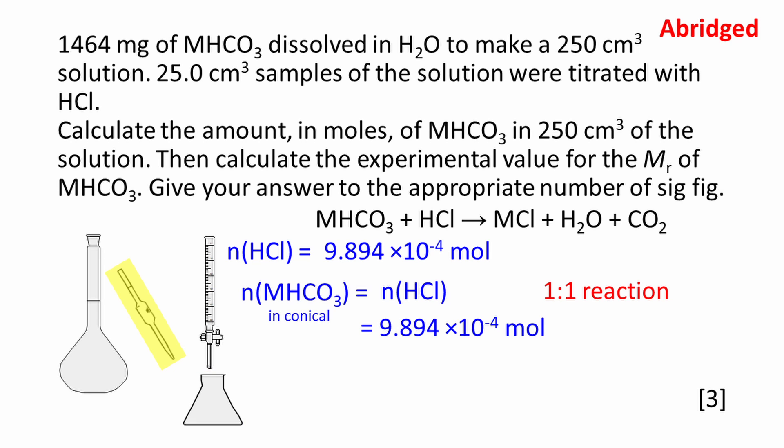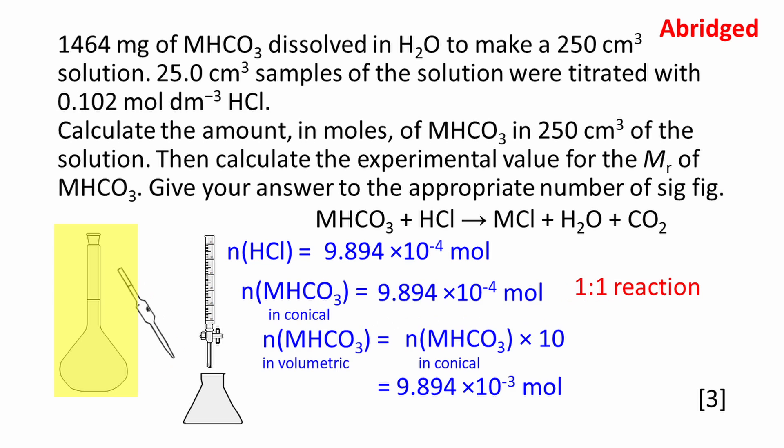Portions of the MHCO3 solution were transferred to a conical flask for each titration using a pipette. 25 cm³ of the solution was used each time. So 9.894 times 10 to the minus 4 moles of MHCO3 is present in 25 cm³ of the solution. There is 250 cm³ of MHCO3 in the original solution. This solution was probably made up in a piece of glassware called a volumetric flask, highlighted in the diagram. The amount of MHCO3 in the 250 cm³ volumetric flask is 10 times the amount of MHCO3 present in 25 cm³. This works out to be 9.894 times 10 to the minus 3 moles.